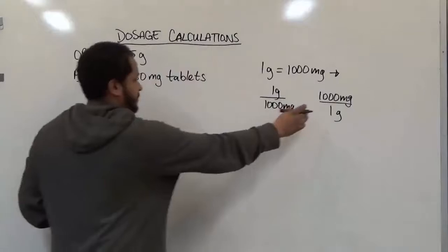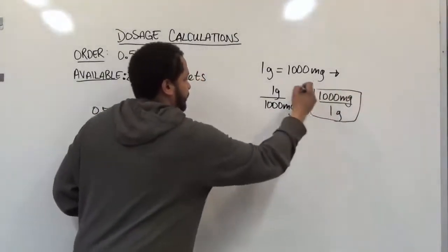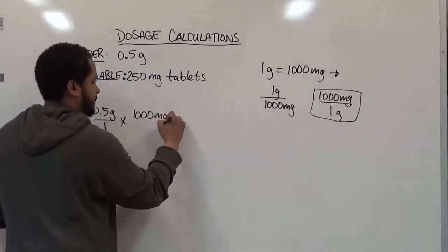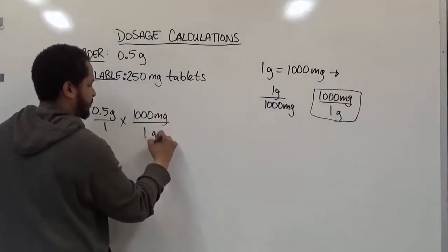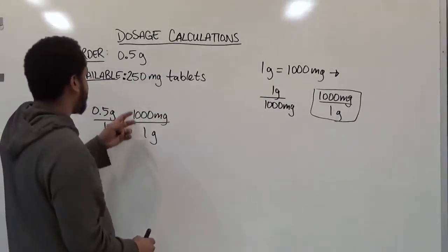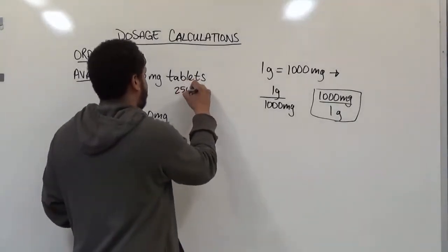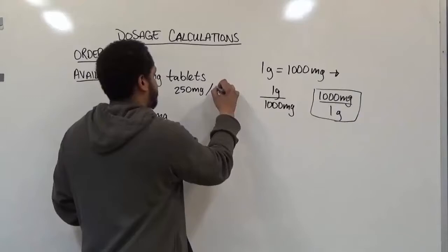In this case, we want to convert grams to milligrams. We're going to have 1,000 milligrams as our numerator over 1 gram. Then we'll use our conversion factor of 250 milligrams to 1 tablet.